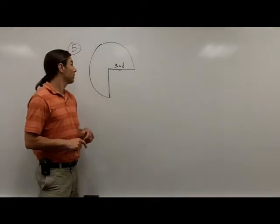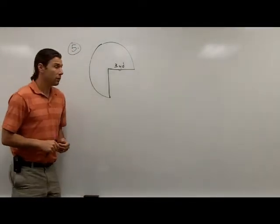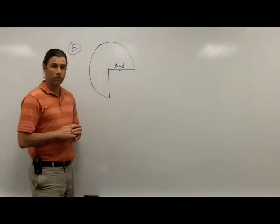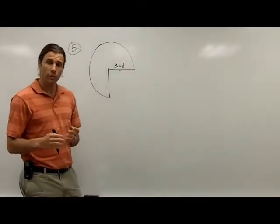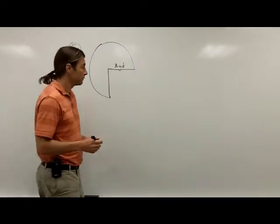Next problem we'll take a look at is problem number 5. Here we're asked to find the area of this 3/4 of a circle. To find the area of 3/4 of a circle, the first thing we're going to do is find the area of the whole circle.